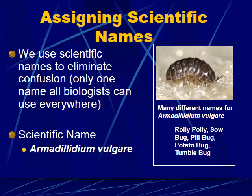We use scientific names basically because it eliminates confusion. Take this little guy on the right — he can be known as a roly-poly, a sow bug, a pill bug, a potato bug, or a tumble bug. It changes from person to person, region to region. This really doesn't work well for science. We want solid, simple names that will be clear no matter where you are, so we use scientific names to eliminate this confusion.